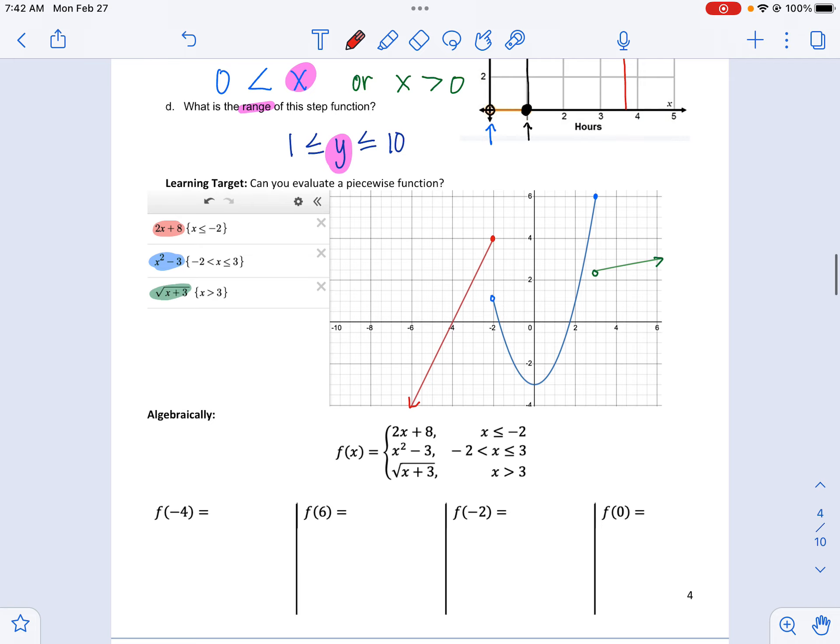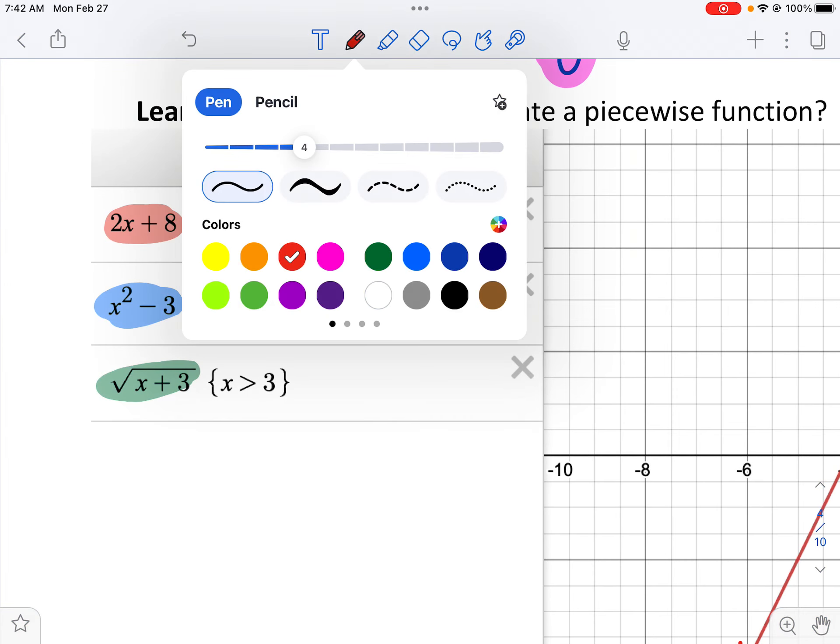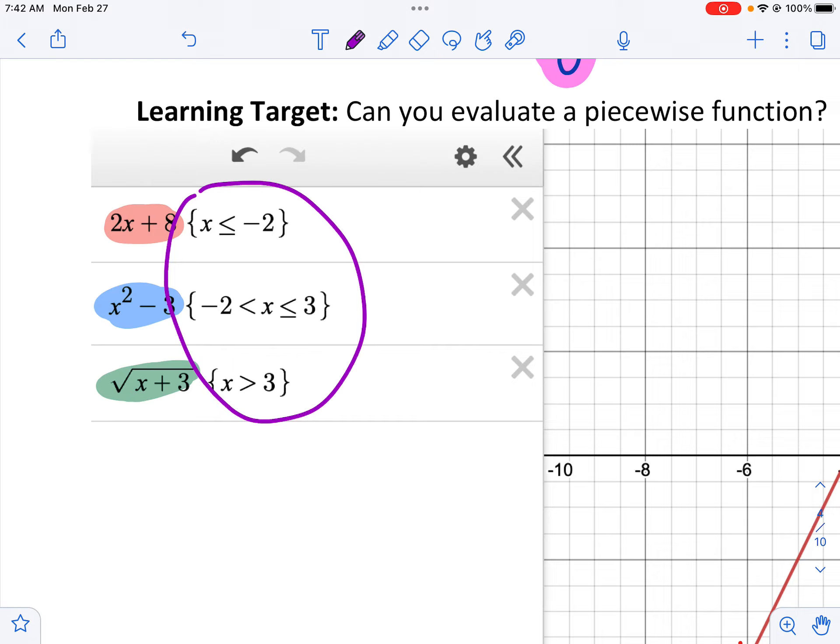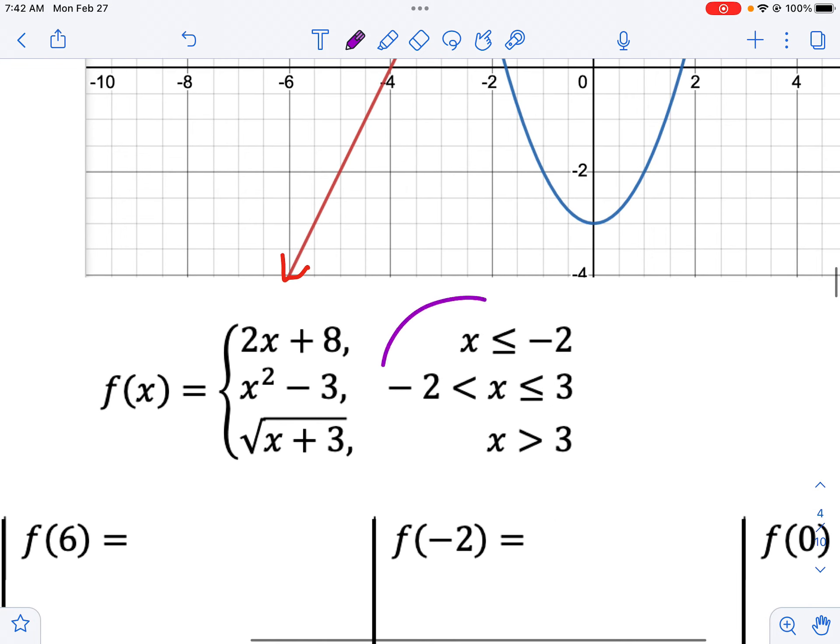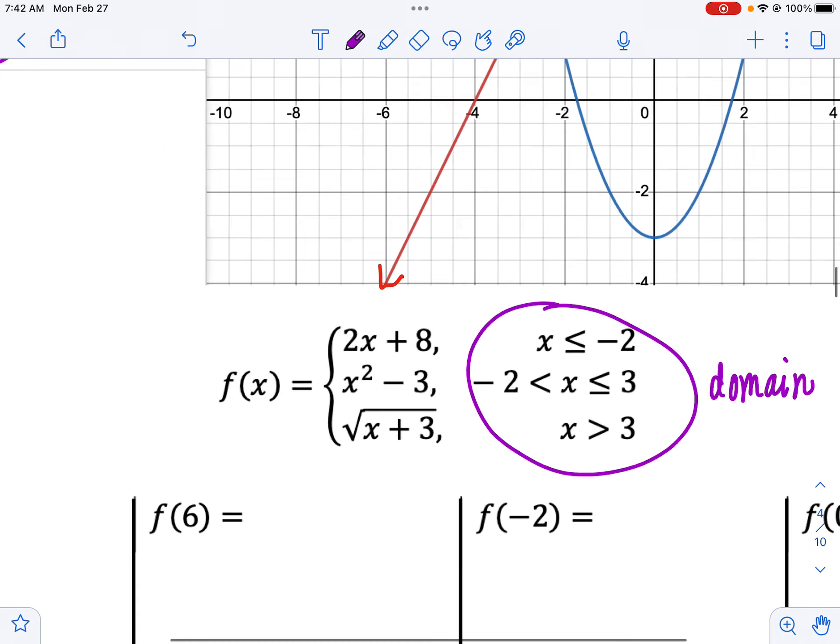So they wrote it out again here. You can see in Desmos they put the domain in these curly brackets and the function is right outside that. Here's what it looks like algebraically. We can see a comma and then here's the domain here. And then we would plug in the function to get the range.